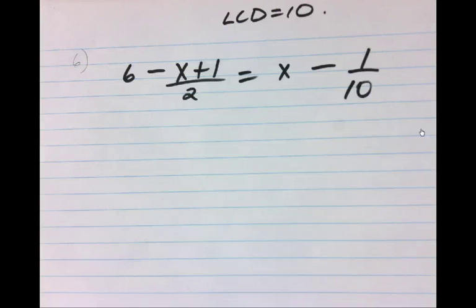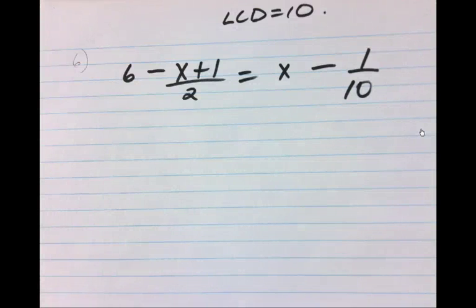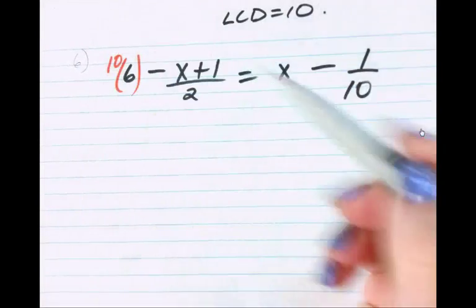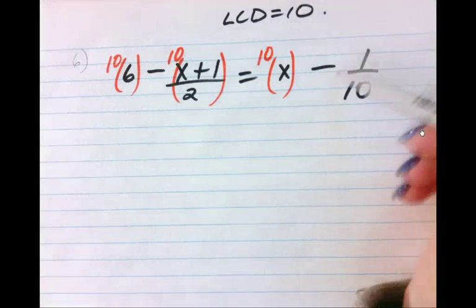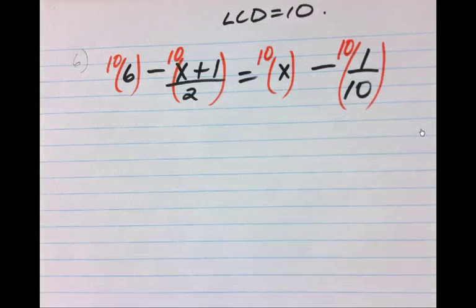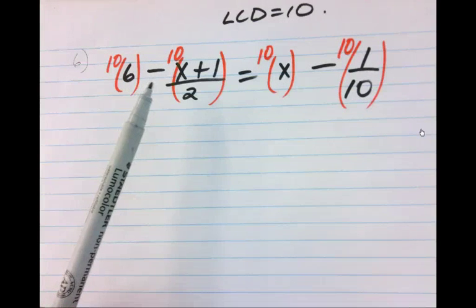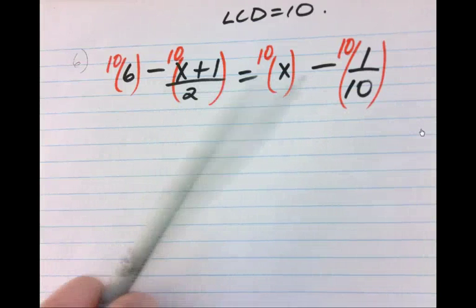Now what I'm going to do is take that 10 and multiply every single term by 10. Okay, now what is a term? Anything that is separated by a plus, a minus, or an equals.